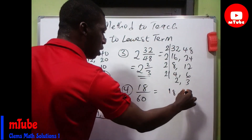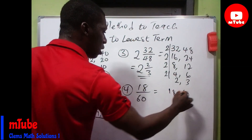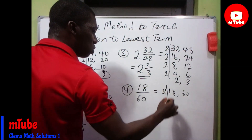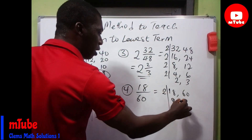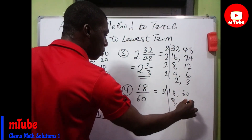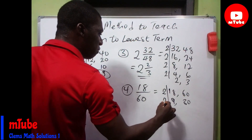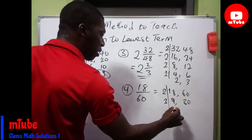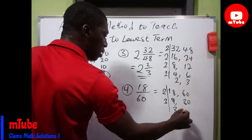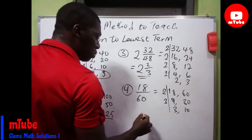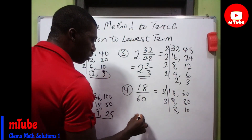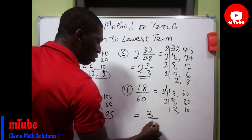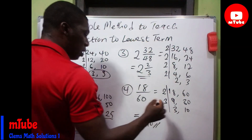Finally, you have 18 over 60. Again, you write out 18 and 60 and divide with their common factors. 2 divides to give 9 and 30, then 3 divides to give 3 and 10. So 18 over 60 reduced to the lowest term is 3 over 10.